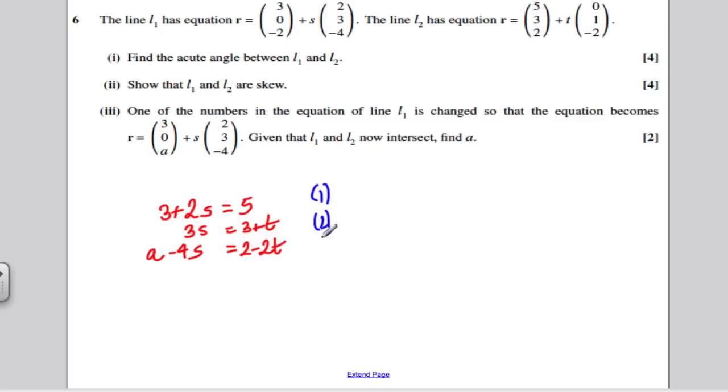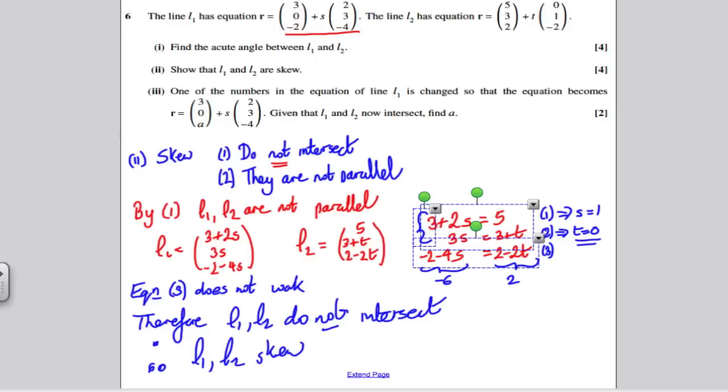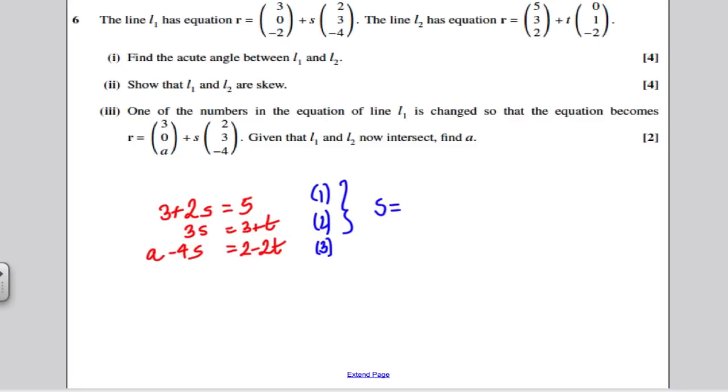Now we already got from 1 and 2, they're the exact same equations as before. We already had from 1 and 2 that these are only solved when S is 1 and T is equal to 0. So putting that into the third equation, A minus 4 lots of 1, A minus 4, must equal 2 minus 0. And rearranging this, adding 4 to both sides, A must be equal to 6. S is 1 and T is 0 must satisfy the third equation. Given that we know they intersect, putting those values in allows us to determine that A is equal to 6.